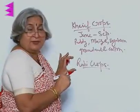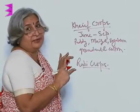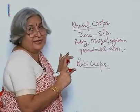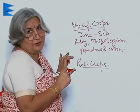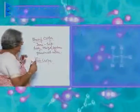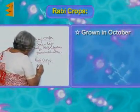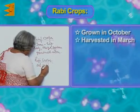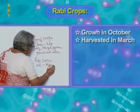Then there are some crops which can grow in winters, like wheat. These are called Rabi crops. Rabi crops are grown in October and harvested in March.